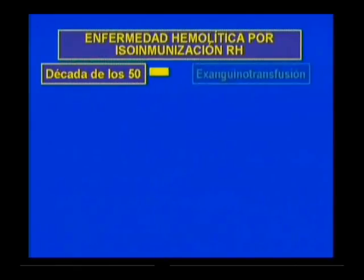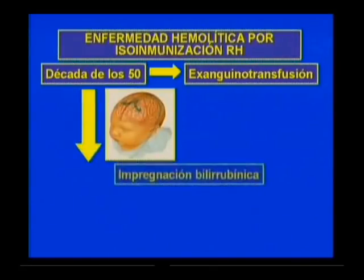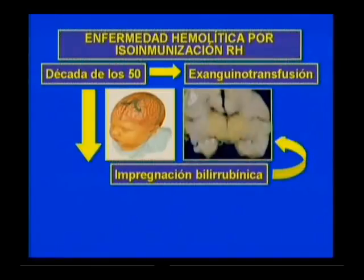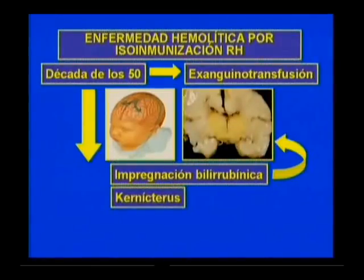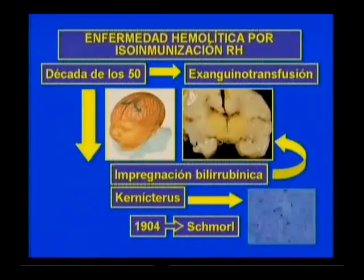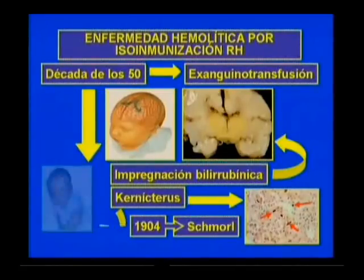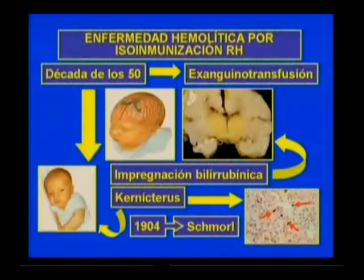En la década de los 50 se comprobó que la exanguineotransfusión era una técnica eficaz para disminuir el riesgo de impregnación bilirubínica a nivel de los núcleos basales, denominada kernícterus. En 1904, S. Moore utilizó por primera vez el término kernícterus para referirse a un hallazgo necróptico consistente en la presencia de pigmentación ictérica focal en zonas degeneradas del cerebro. El kernícterus es la complicación más temida de esta enfermedad.